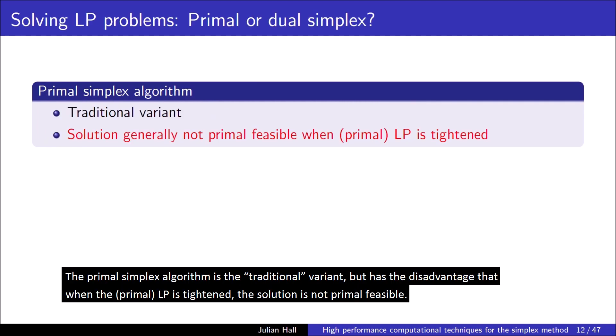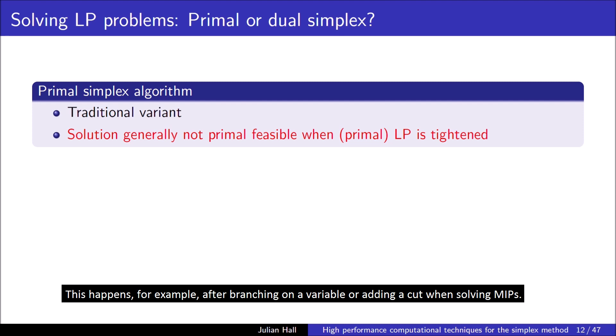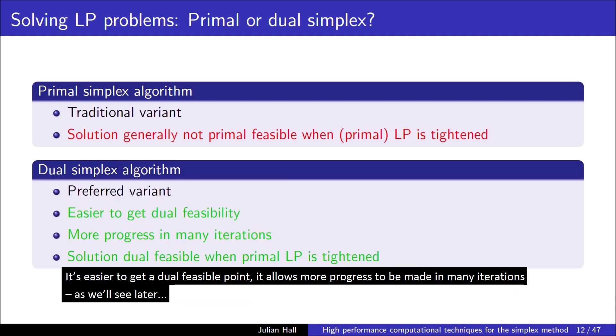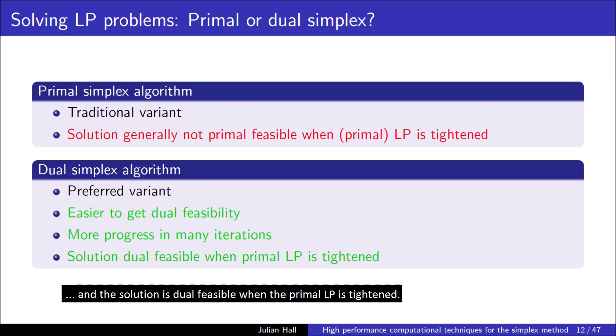The primal simplex algorithm is the traditional variant, but has the disadvantage that when the primal LP is tightened, the solution is not primal feasible. This happens, for example, after branching on a variable or adding a cut when solving MIPs. The dual simplex algorithm is the preferred variant. It's easier to get a dual feasible point. It allows more progress to be made in many iterations, as we'll see later. And the solution is dual feasible when the primal LP is tightened.